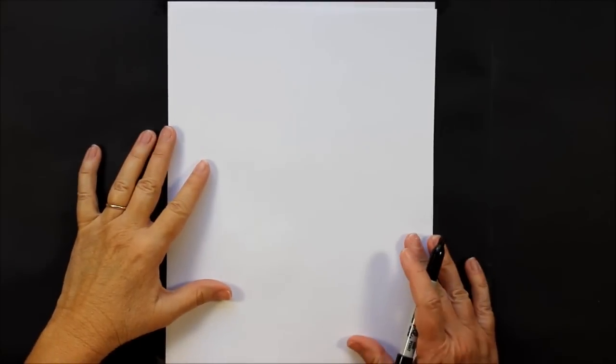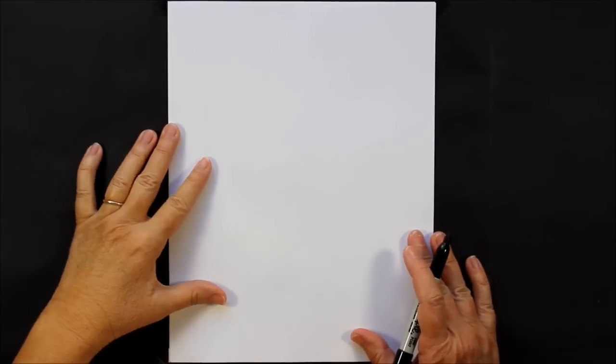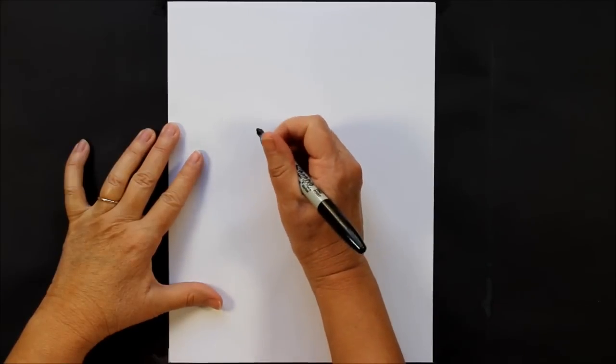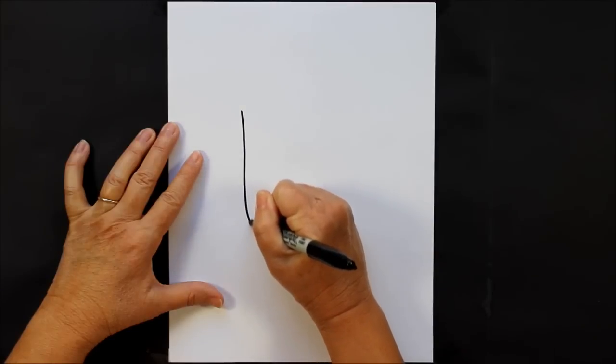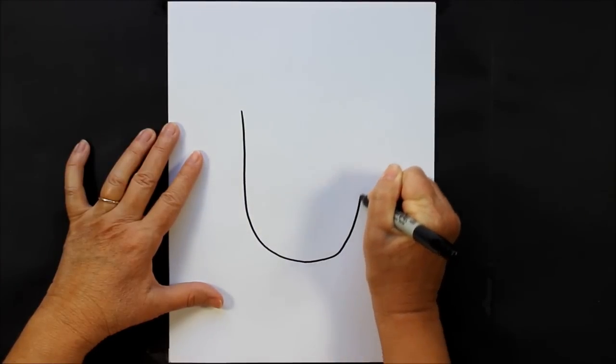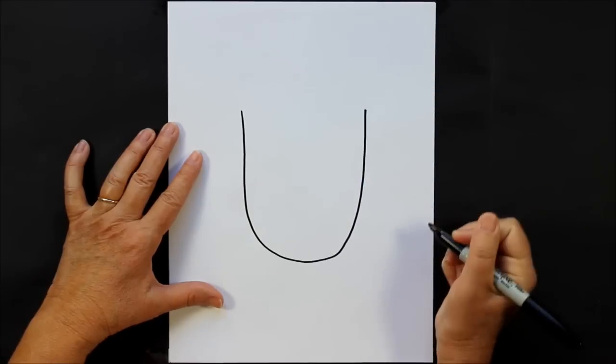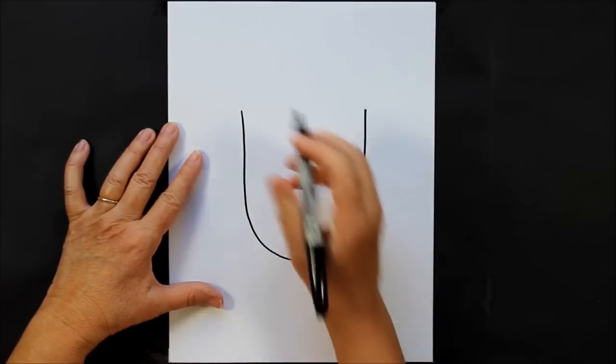Hi there, how are you? Today we are going to be creating an owl, so let's get started. We're going to start out with a large U-shape, just like that. Now at the top of your U-shape on either side, you're going to make some slanted lines down.